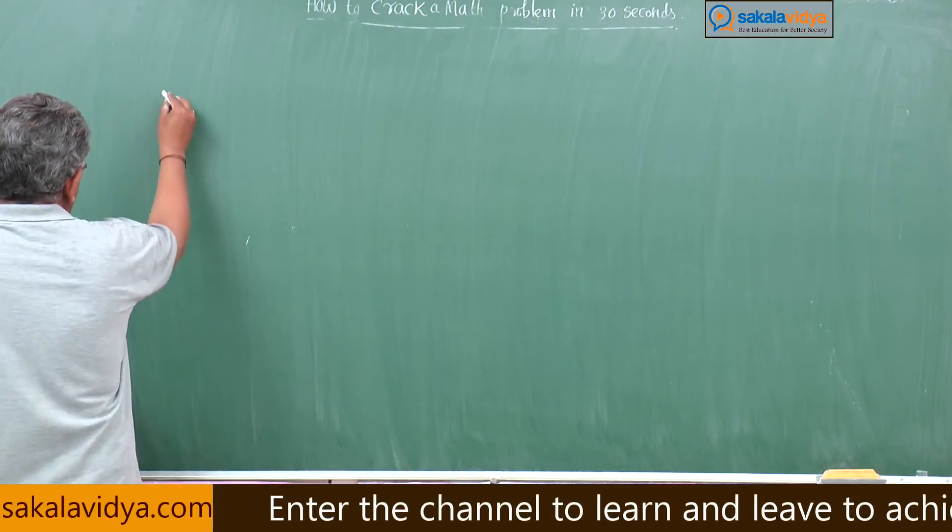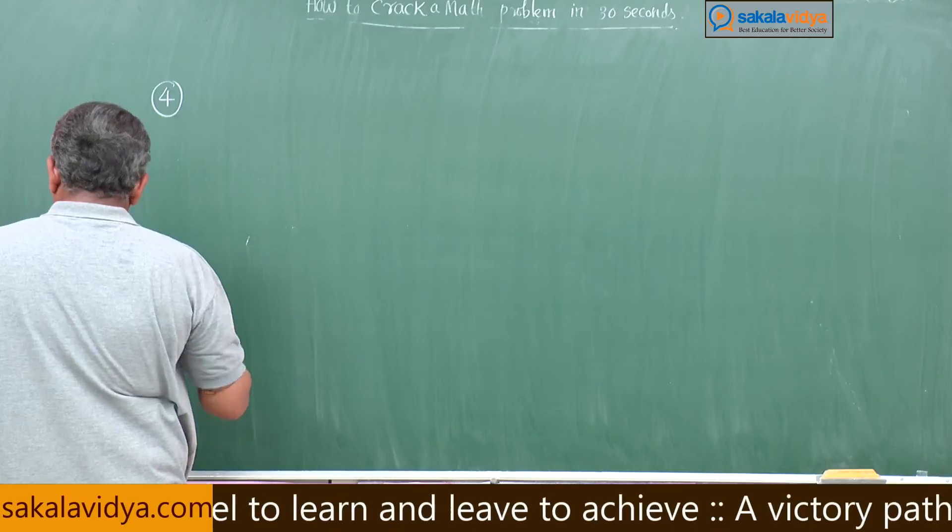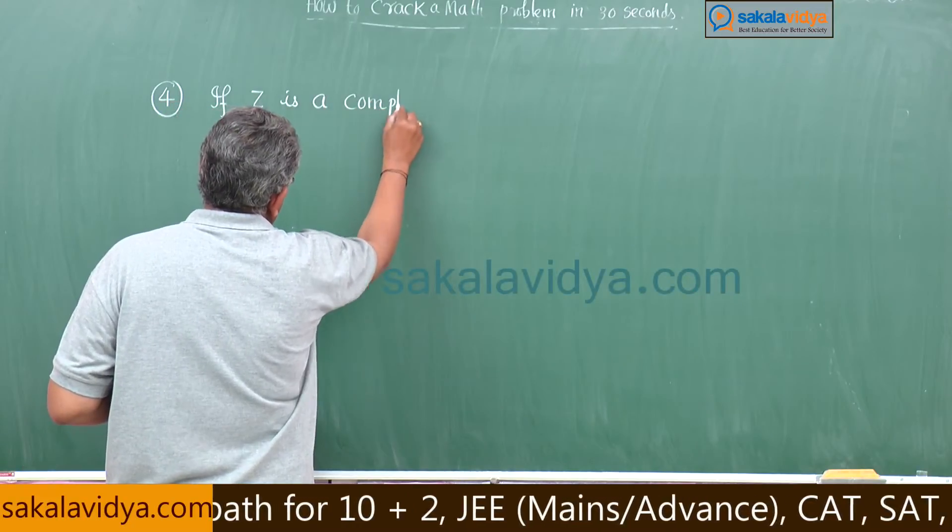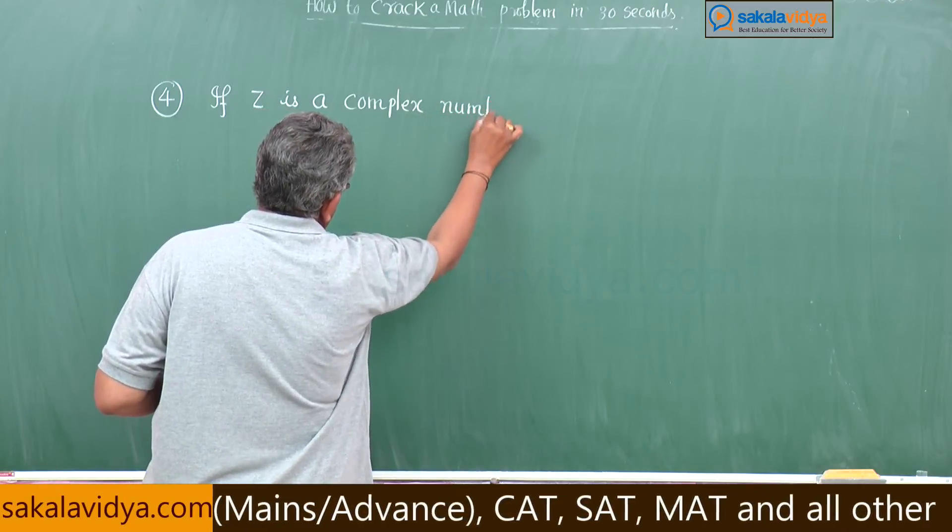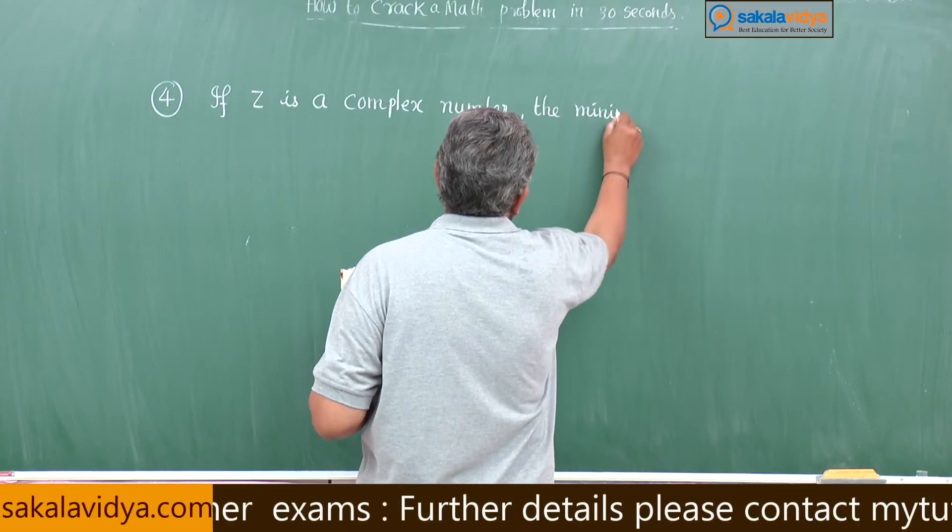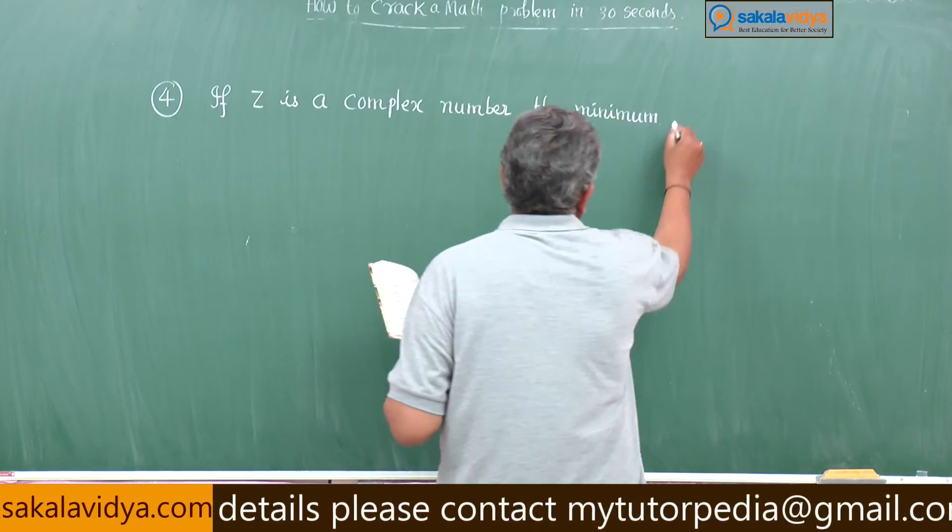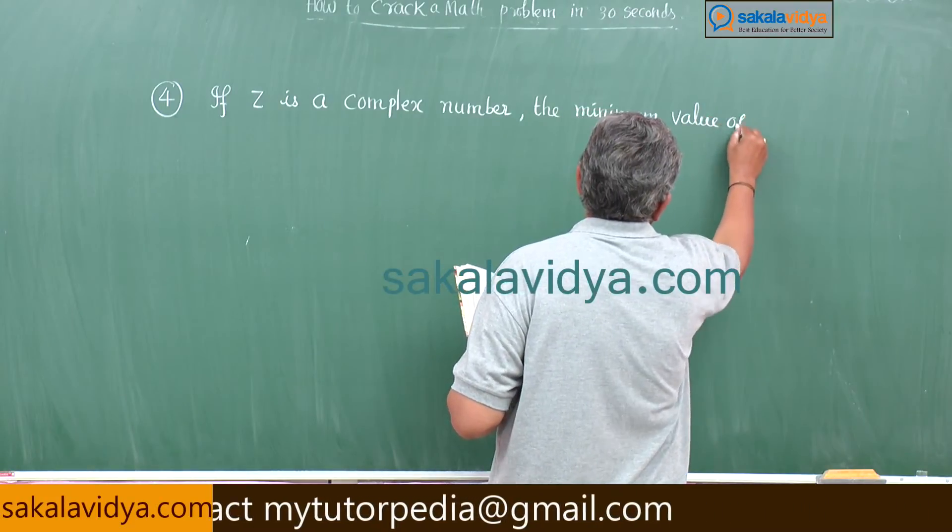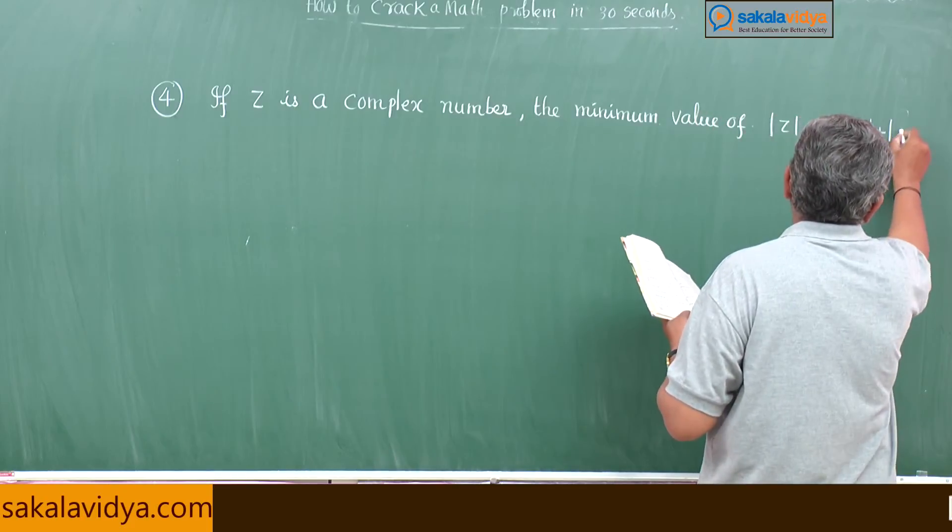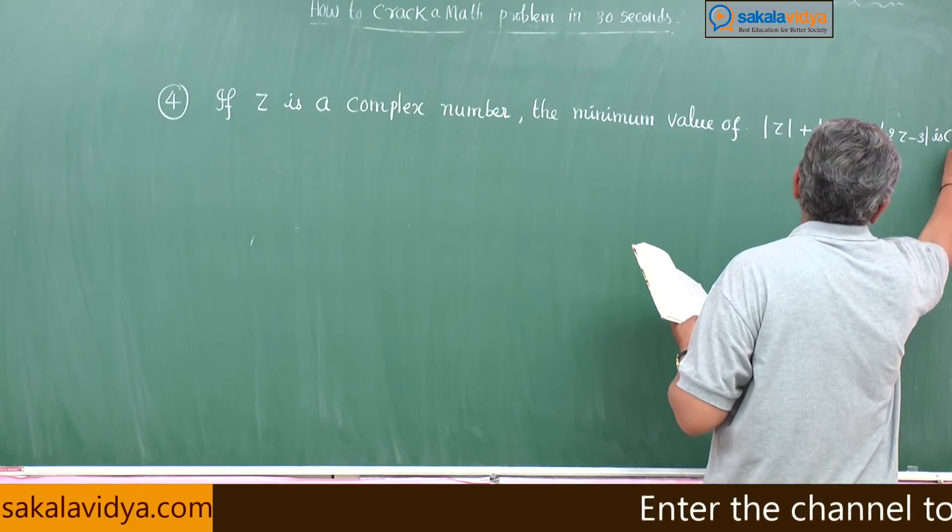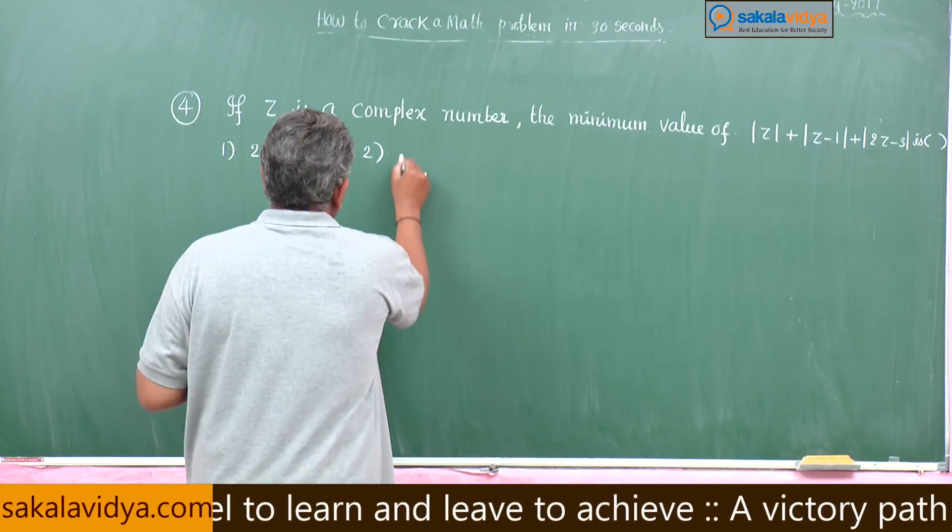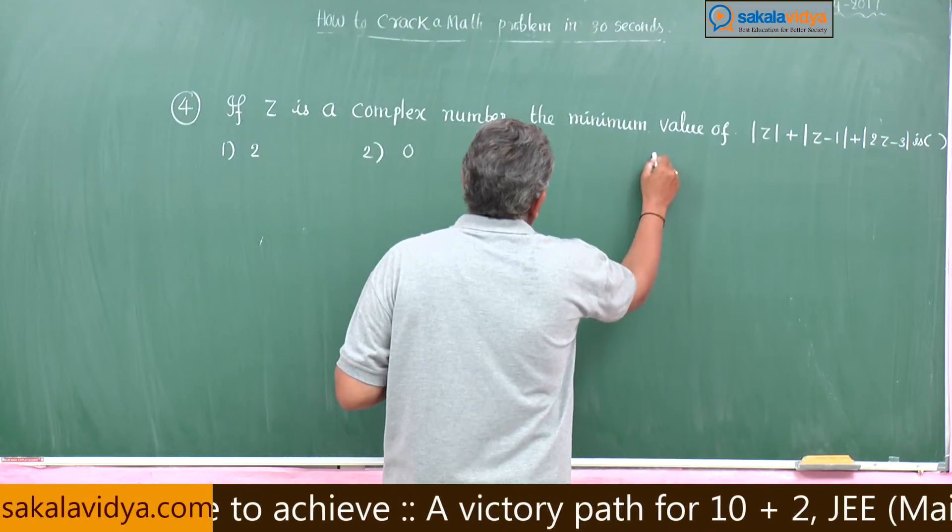Fourth problem: If z is a complex number, the minimum value of mod z plus mod z minus 1 plus mod 2z minus 3 is: first option 2, second option 0, third option 1, fourth option 5.